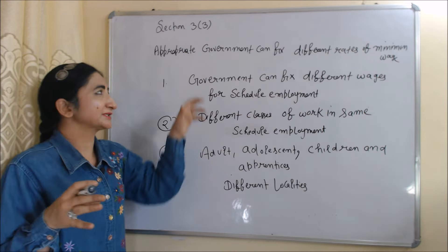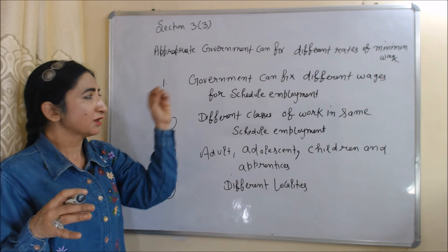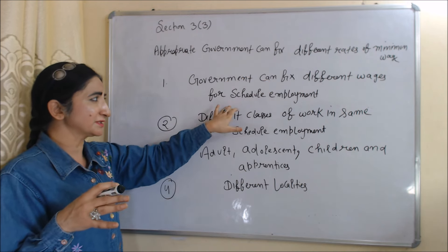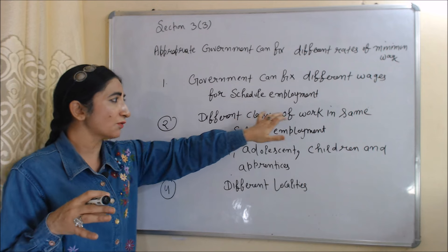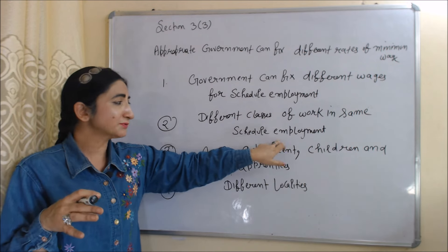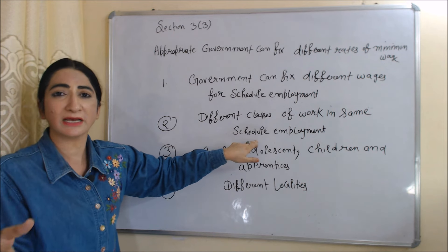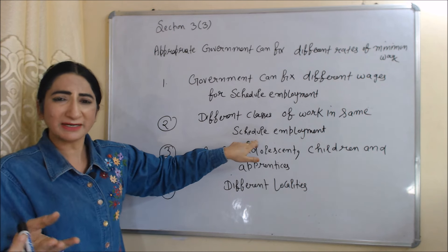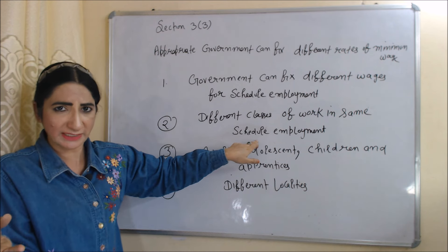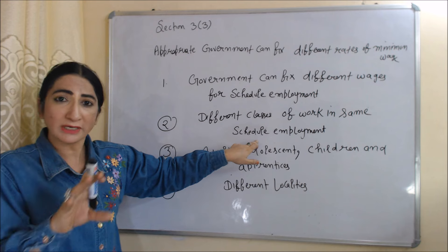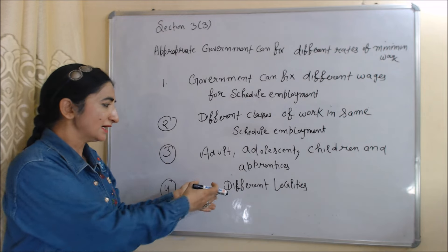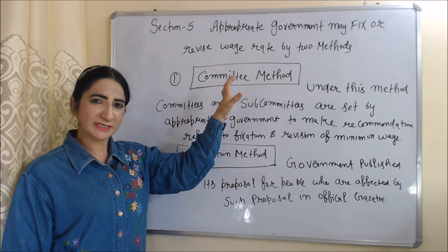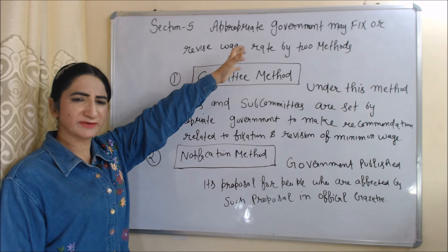According to Section 3(3), the appropriate government can fix different rates of minimum wages. For example, the government can fix different wages for different scheduled employments, or fix wage rates for different classes of work within the same scheduled employment — such as full-time workers, part-time workers, seasonal, or unpredictable workers. The government can also fix wages for adults, adolescents, children, apprentices, and different localities.